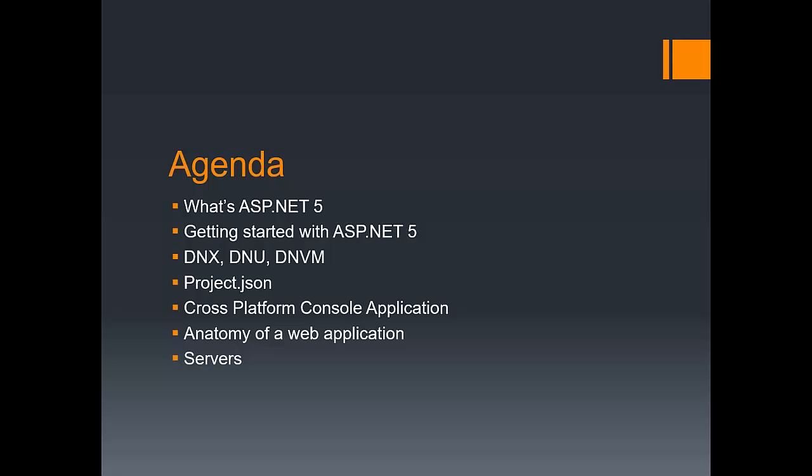During the next half hour we are going to see what ASP.NET 5 is, how to get started with ASP.NET 5 — meaning how to install it — then we'll look at the command line tools now available to handle ASP.NET 5 applications, which are called DNX, DNU, and DNVM. We'll look at project.json, the new configuration file, then build a console application that runs on both Windows and Mac, and then a sample web application. Finally, we'll look at which servers you can use for running ASP.NET 5.